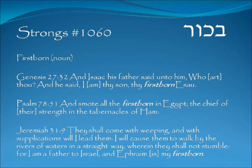'Bachor' means the firstborn. Genesis 27:32 — Isaac said to him, 'Who art thou?' And he said, 'I am thy son, thy firstborn, Esau.' Now Jacob is lying here — he is not the firstborn, but Esau was born first and would have inherited the birthright. Psalm 78:51 — 'And smote all the firstborn in Egypt, the chief of their strength in the tabernacles of Ham.' During the plagues, the oldest child in each household was slain, so every firstborn child was slain.